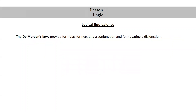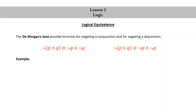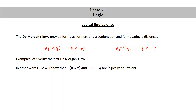The DeMorgan's laws provide formulas for negating a conjunction and for negating a disjunction. The first DeMorgan's law is: the negation of p and q is logically equivalent to not p or not q. The second DeMorgan's law is: the negation of p or q is logically equivalent to not p and not q. Let's verify the first DeMorgan's law two different ways.